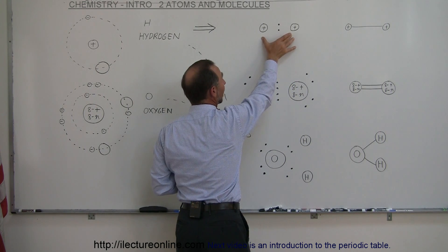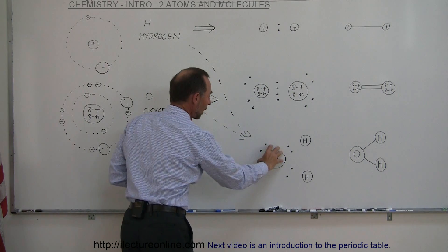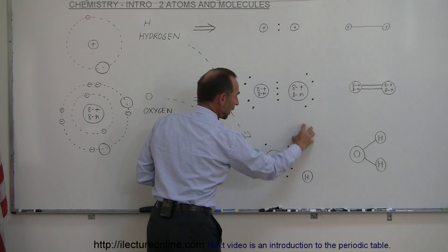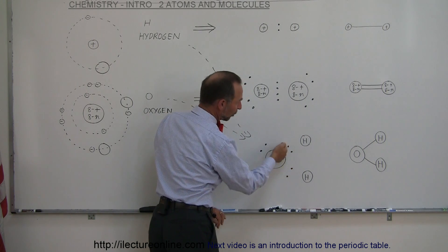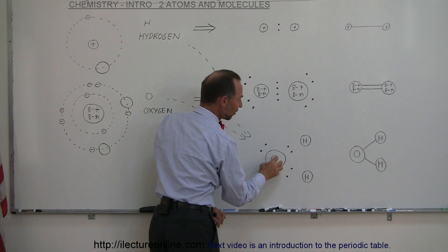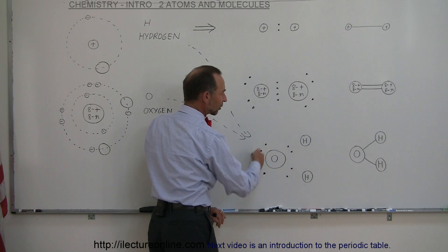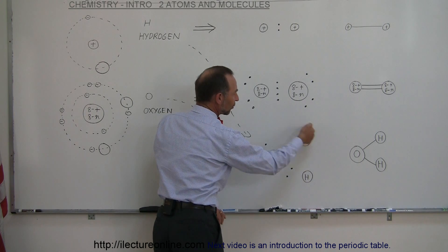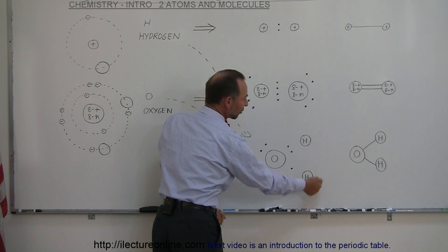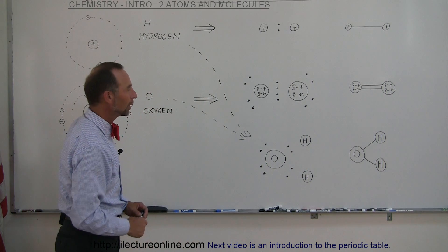We can have what we call a diatomic molecule of two hydrogens, a diatomic molecule of two oxygens, or we can have one oxygen joined together with two hydrogens. Notice that two electrons are shared between the hydrogen and the oxygen, two electrons are shared between this hydrogen and this oxygen, in such a way that part of the time this oxygen gets eight electrons, part of the time this hydrogen gets two electrons, and part of the time this hydrogen gets two electrons. There's a sharing or covalent bonding going on between those atoms.